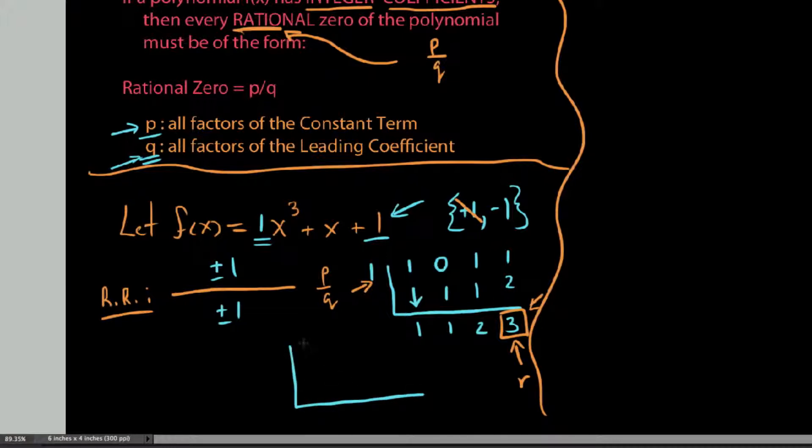So, 1 doesn't work. So, what we're going to do is we're going to try negative 1. We say, okay, so 1, 0, 1, 1. We'll load this up with a negative 1 here. I'll draw on a partition so we don't get these confusing. We say, okay, so dropping down to 1, we say 1 times negative 1 is negative 1 plus 0 is negative 1. Sorry, I'm going fast. Negative 1 times negative 1 is 1. 1 plus 1 is 2. Negative 1 times 2 is negative 2. And then add these together, negative 1.